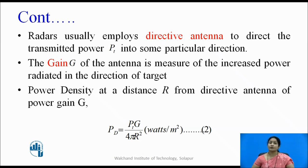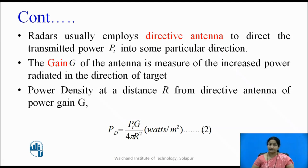Radars usually employ a directive antenna to direct the transmitted power Pt in a particular direction. The gain of the antenna is a measure of the increase in power radiated in the direction of the target. Therefore, in the equation for power density at distance r, the directive antenna gain G is considered, and the above equation is modified accordingly.